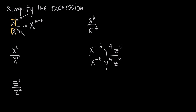The only condition is that the bases have to be the same. In this case, they're both base x. If we look at this with real numbers, we have base x to the sixth power divided by base x to the fourth power, so this is going to be x to the sixth minus four, or x squared — six minus four is two.